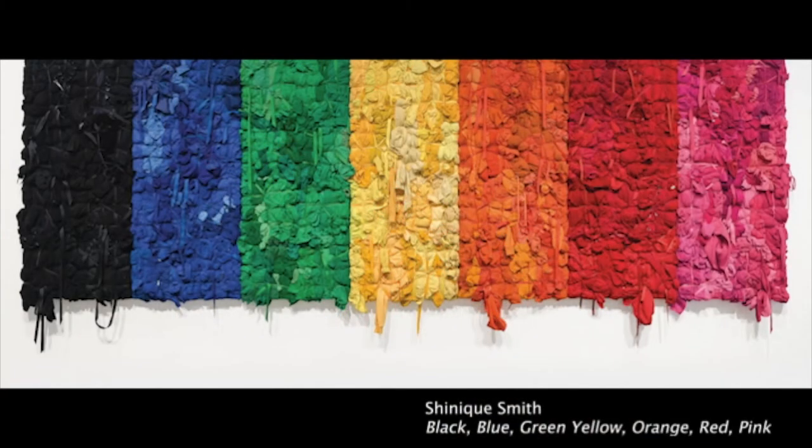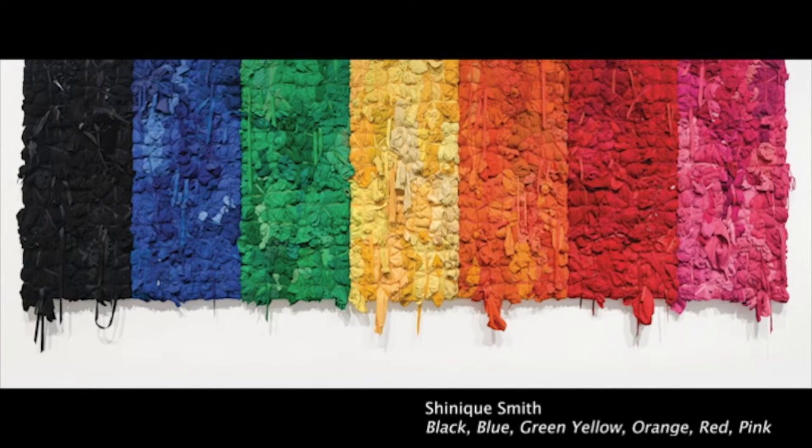In Black, Blue, Green, Yellow, Orange, Red, Pink, Shanique Smith tells the story of her community. She created this 14-foot artwork by collecting and arranging clothing from her friends and family members.